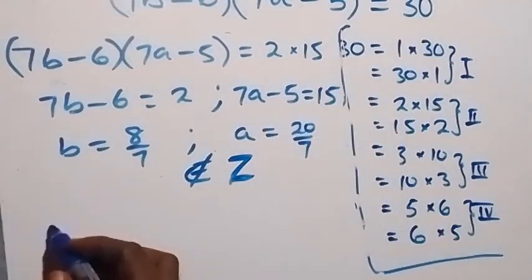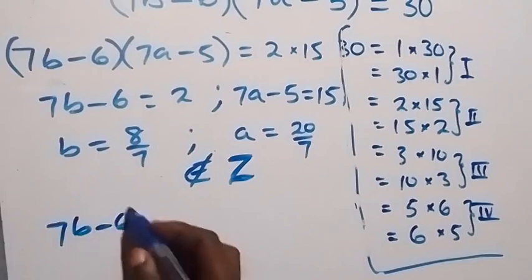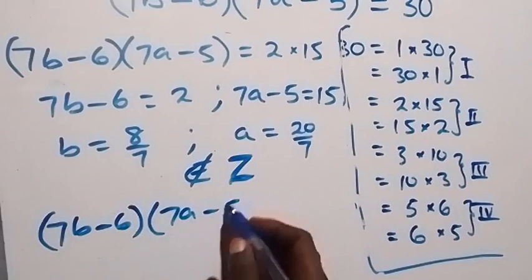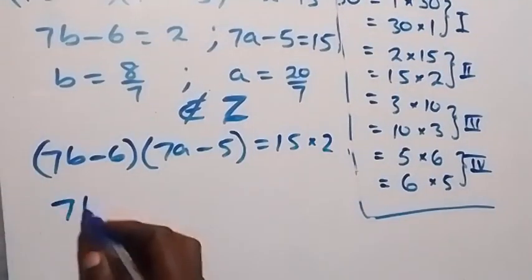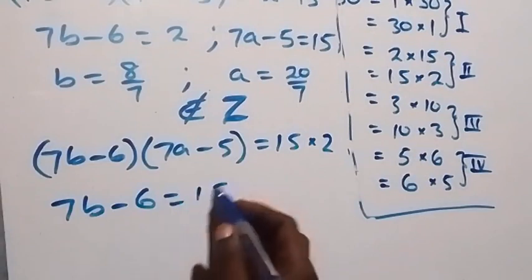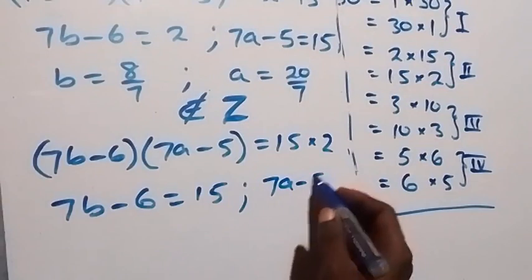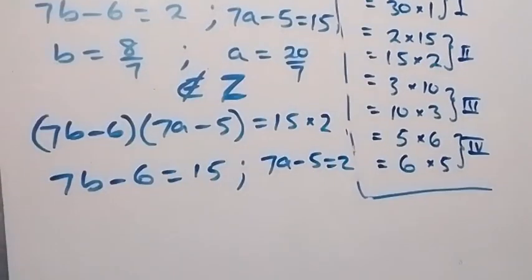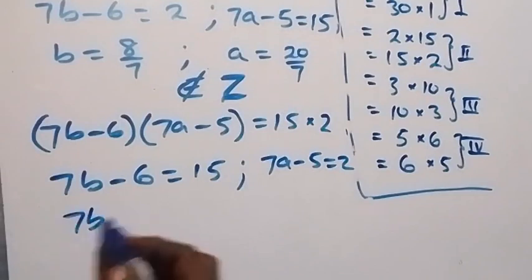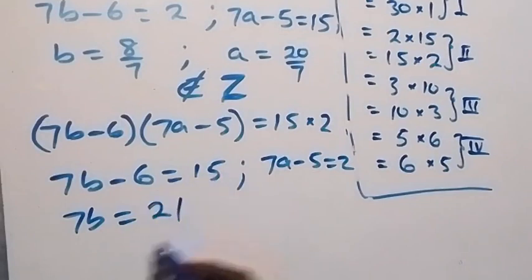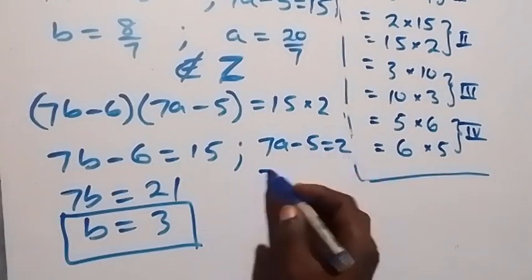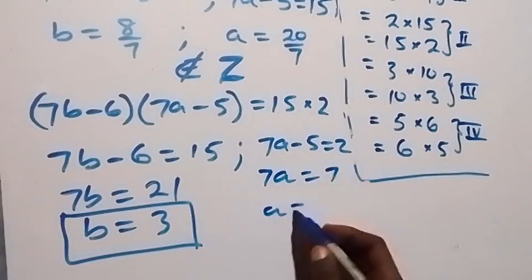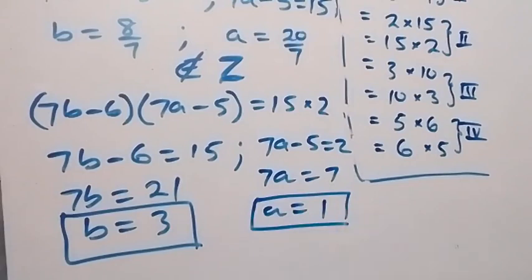When we interchange Case 2 to 15 times 2: (7b minus 6) times (7a minus 5) equals 15 times 2. We equate 7b minus 6 equals 15 and 7a minus 5 equals 2. Solving: 7b equals 21, so b equals 3 — an integer solution. And 7a equals 7, so a equals 1 — also an integer solution.